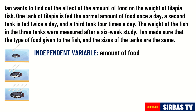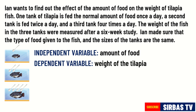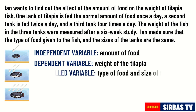The first tank is fed once a day, the second tank is fed twice, and the third tank is fed four times a day. The dependent variable is the weight of the tilapia after the six-week study, because the weight is the one being observed and recorded, and it depends on the amount of food given. Ian made sure the type of food and the size of the tanks were kept the same — those are the controlled variables.